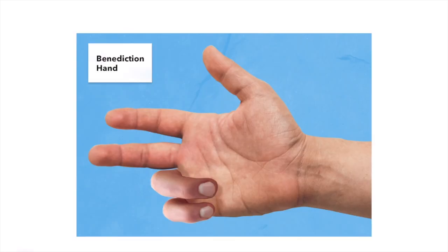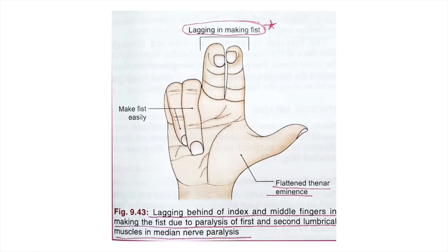When the person is asked to close the fist, you will find that he is able to flex the IP joints of the little and ring fingers, but he is not able to flex the index finger, middle finger, or thumb. Although the middle finger may be partially flexed — not extended to the full extent.